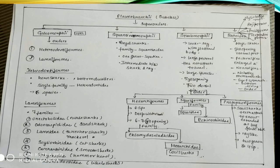If we see the super orders, subclass Elasmobranchii is divided into super order Galeomorphi. For learning purposes, I have written in short GHL means Galeomorphi. Orders are Heterodontiformes and Lamniformes. Heterodontiformes characters are they are horn sharks, bottom dwellers, and the single family is Heterodontidae. Total six species are known.